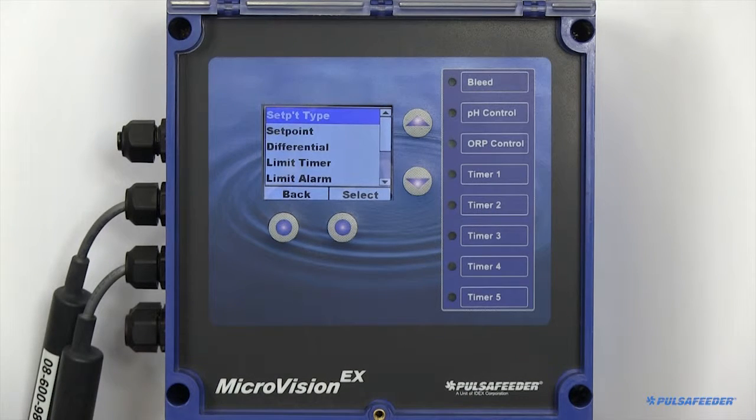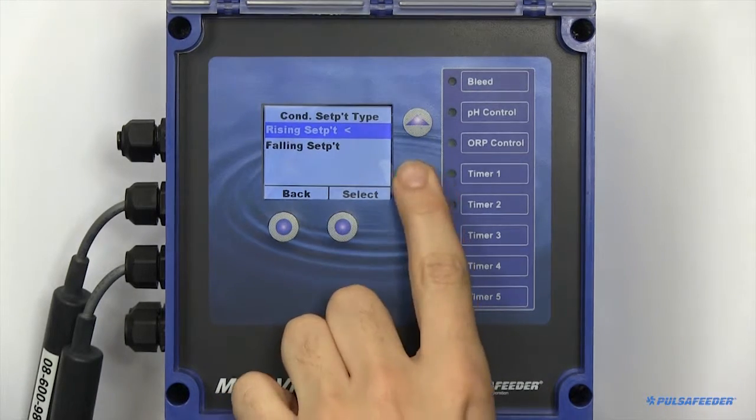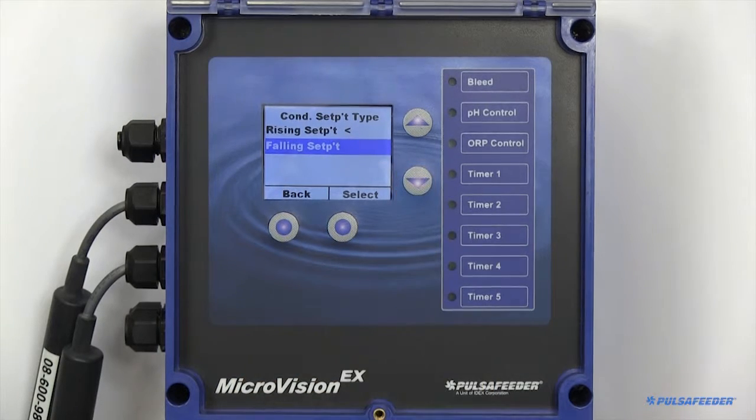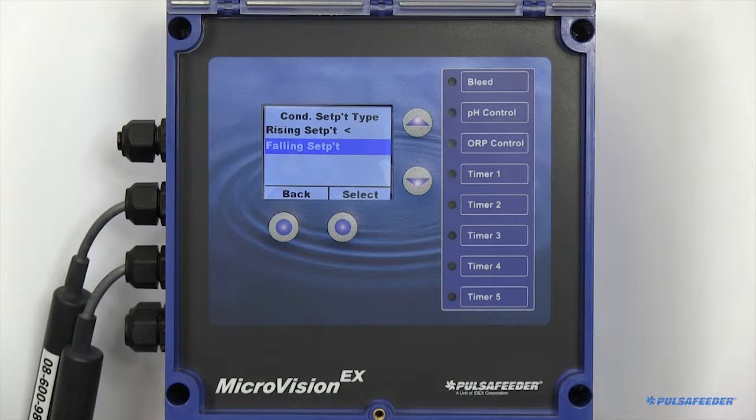To set up your conductivity probe, you need to choose your set point type. You can choose between rising or falling. Rising type means that the output activates when the input goes above the set point. Falling type activates the output when the value goes below the set point.